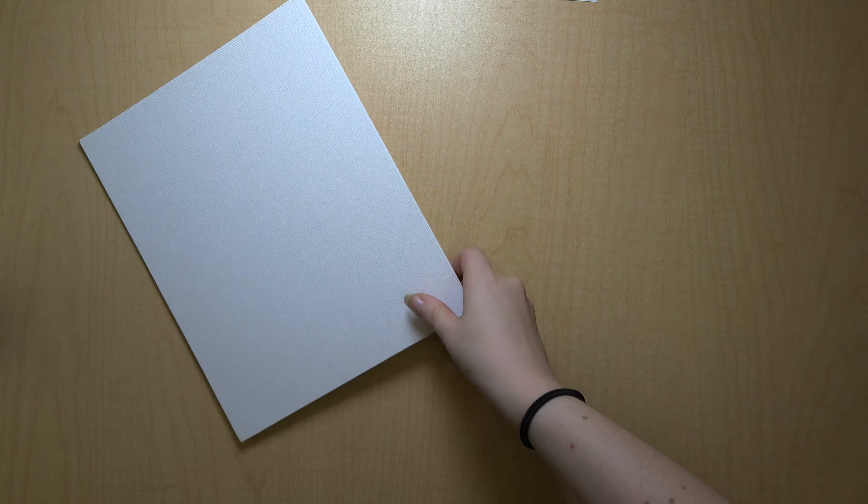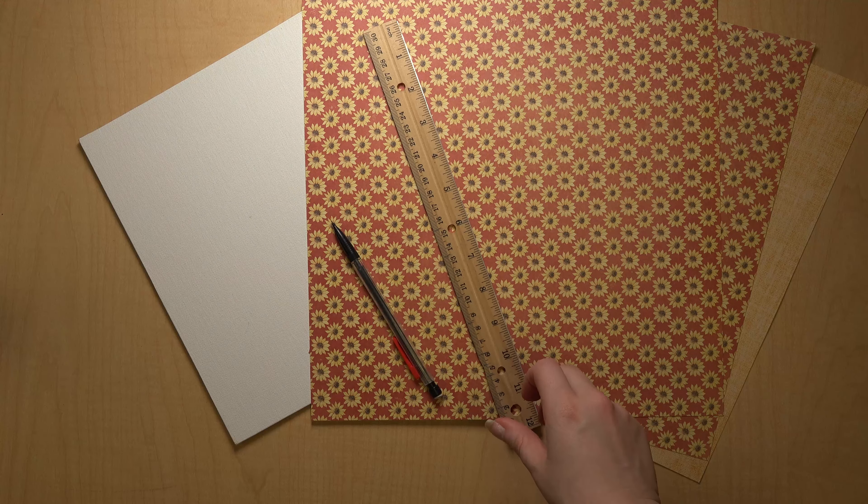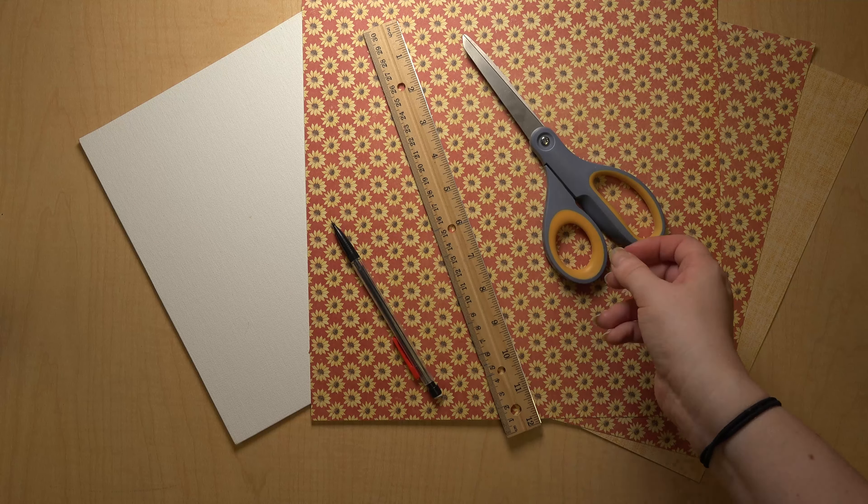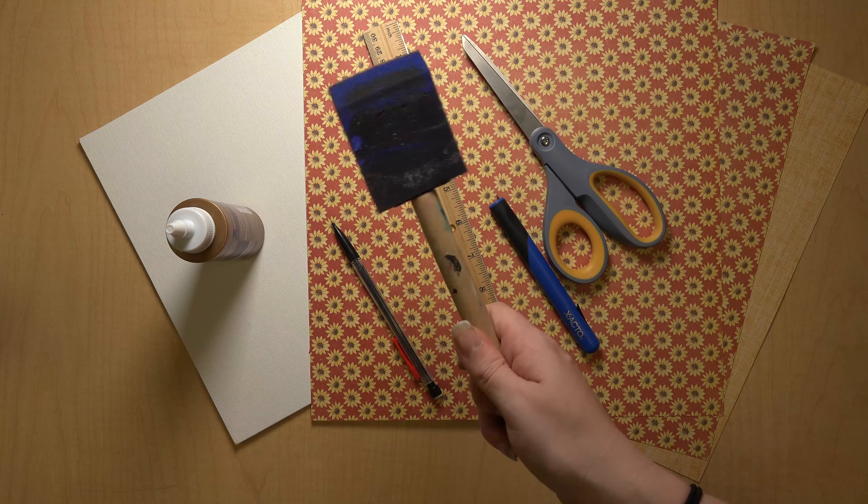For this project, you'll need one to two canvas boards or chip boards, depending on the size you want, some decorative paper, a pencil, a ruler, scissors, an exacto knife, tacky glue, and a sponge brush.